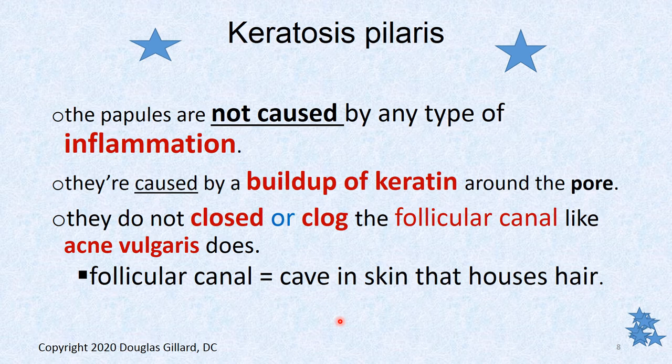It's caused by keratin deposition — and the keratin is dumped on the surface of the top layer, the stratum corneum, and starts to pile up. It's almost like a gopher hole with a little mound of dirt surrounding it. This keratin has nothing to do with clogging up the follicular canal. Acne vulgaris is a clogging of the follicular canal — the bacteria breed and cause inflammation, and that's a zit. But KP is non-inflammatory; you can't pop it.